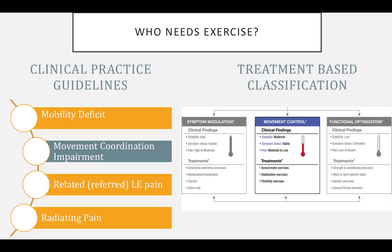Per the 2017 update of the treatment-based classification system, after a patient's acute symptoms are minimized to allow for moderate disability, stable symptoms, and moderate to low pain, the patient should transition into movement control. Treatments here include sensory motor exercise such as dissociation and articulation, stabilization exercises, and flexibility exercise. Once patients have proven competency with good motor control, they then progress to functional optimization, where the goal is strength and endurance. Please note that to progress to functional optimization, disability must be low and symptoms controlled. Also note that some patients may not need to progress to functional optimization — they may demonstrate good motor control after acute symptoms resolve or with very minimal coaching.